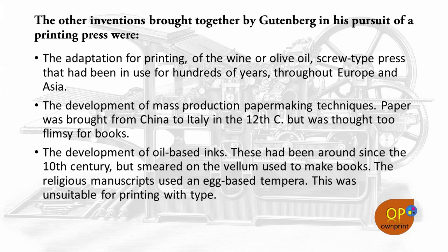The other inventions brought together by Gutenberg included: the adaptation for printing of the wine or olive oil screw-type press that had been used for hundreds of years throughout Europe and Asia; the development of mass production paper-making techniques — paper was brought from China to Italy in the 12th century but was not considered fancy enough for books; and the development of oil-based ink, which had been around since the 10th century but would smear on the vellum used to make books. The religious manuscript used an egg-based tempera, which was unsuitable for printing with type.